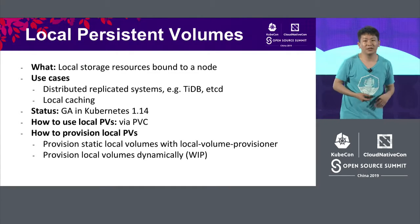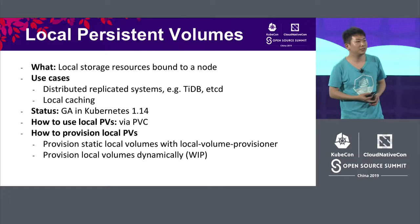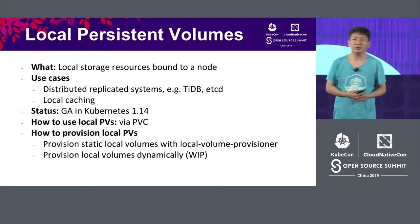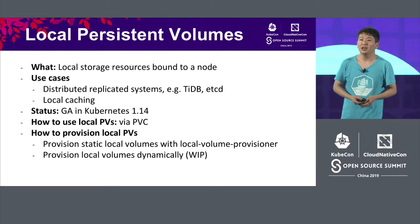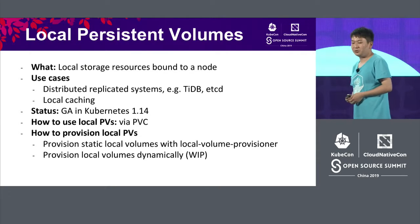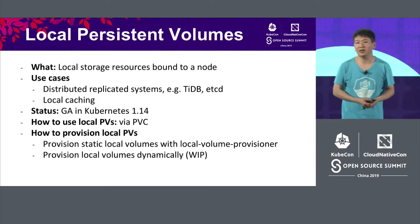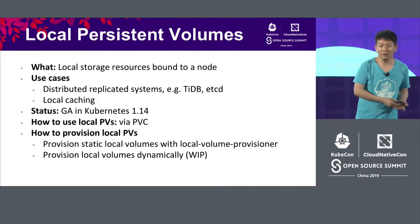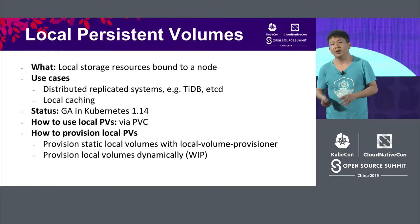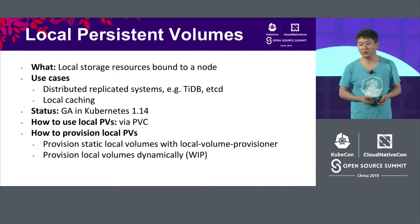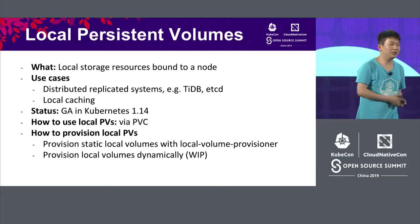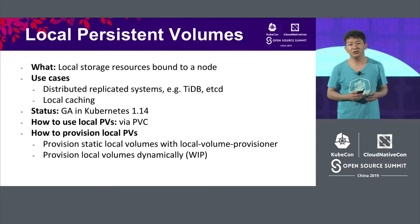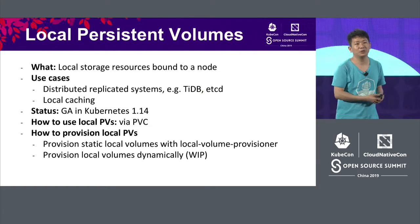This is the type of the local persistent volume. It is local storage resources bound to the node, like SSDs and HDDs. It can provide higher throughput and lower latency. It can only have local access, and when there is node failure, it has no access.